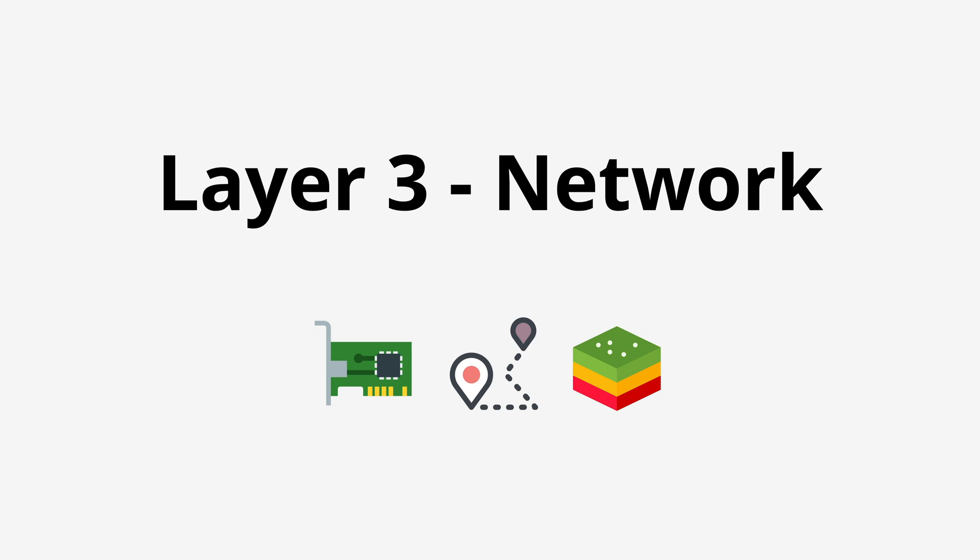As I've mentioned in previous videos, each layer of the OSI model builds on the layers below it. So layer 3 requires one or more operational layer 2 networks to function.